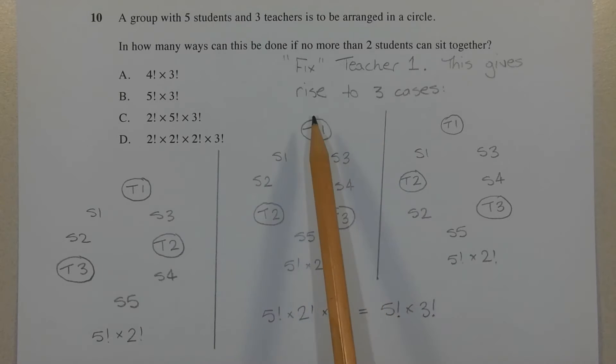In the first case, teacher T1 is at the top of the circle, surrounded by two students on either side, so student 1, student 2, student 3, student 4, and then there's teacher 2 here and teacher 3 here, such that no more than two students are seated together, and the fifth student is seated here, S5.